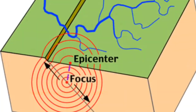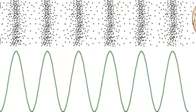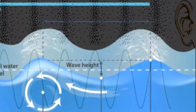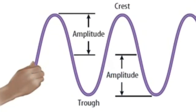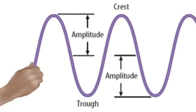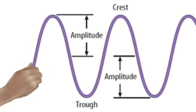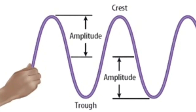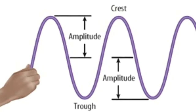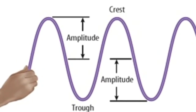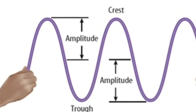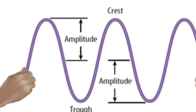An example of mechanical waves are seismic, sound, and ocean waves. A wave is made up of many parts. Two parts are the crest and the trough. The crest is the highest point of a wave, and the trough is the lowest point of the wave.